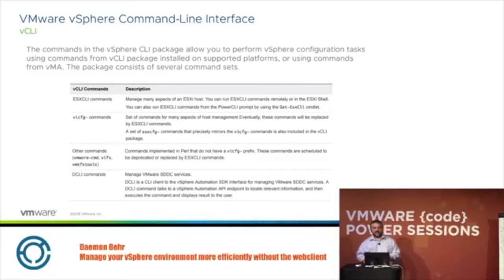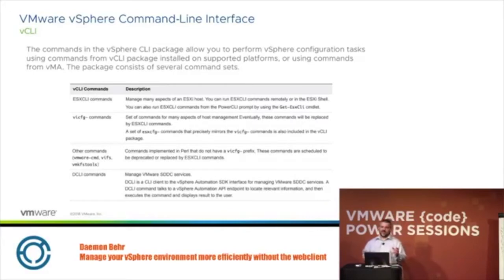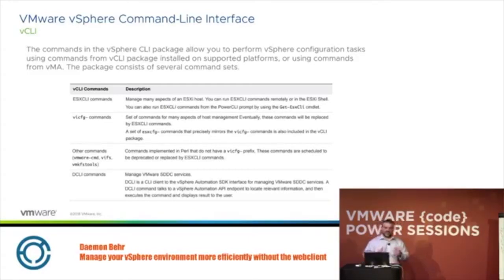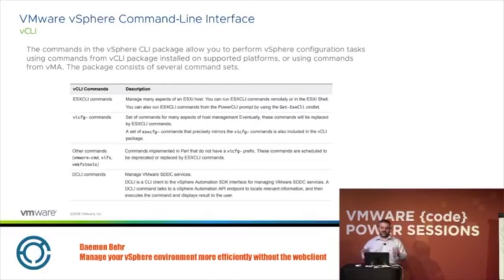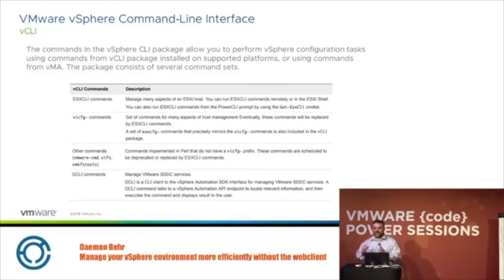The vCLI is a package that you install on your workstation that connects to your environment in a very similar way to how the VMA worked in the past. If you remember the first image I showed, it showed all those different interfaces — ESXCLI, DCLI, VICFG — all of that's accessible through the vCLI package. This is your one-stop shop for everything you need to do in your vSphere environment. Once you download this package you can use it for doing everything you need to do.